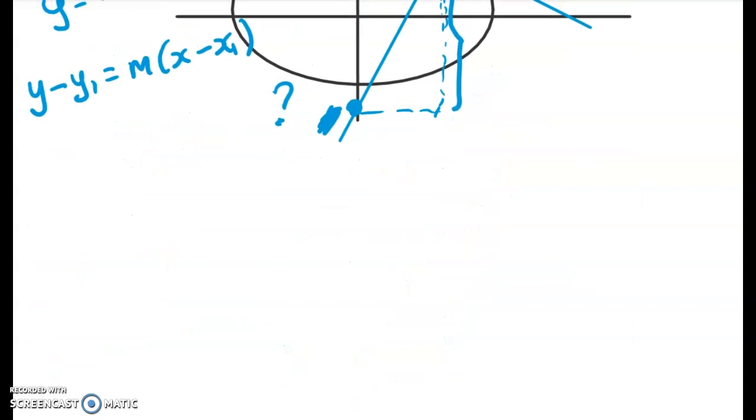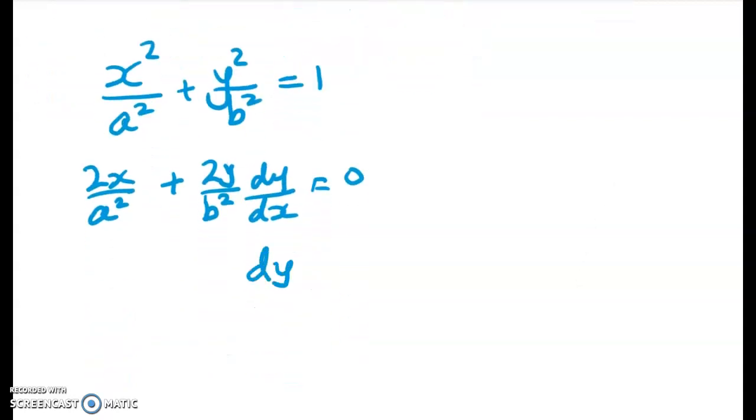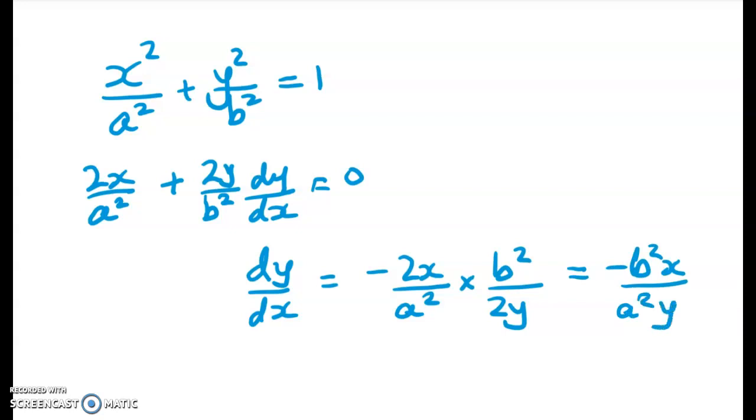So let's start off by doing the gradient. We've got x squared over a squared plus y squared over b squared is equal to 1. Differentiating implicitly gives me this. 2x over a squared plus 2y over b squared times dy by dx equals 0. So rearranging gives me dy by dx is equal to this. Negative 2x over a squared times b squared over 2y. And that cleans up to negative b squared x over a squared y. So that's for the tangent.